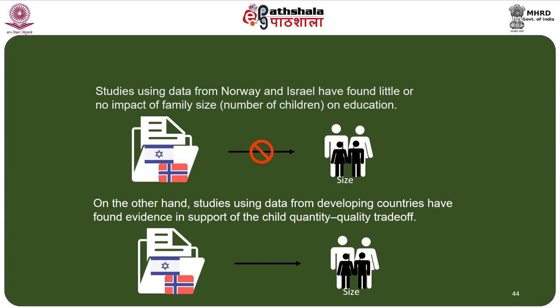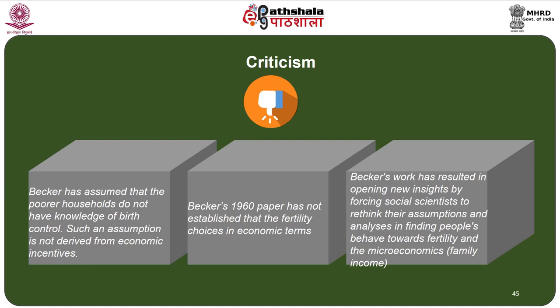There are major criticisms of Becker's theory of fertility. First, Becker assumed that poorer households lack knowledge of birth control — an assumption not derived from economic incentives alone. Second, Becker's 1960 paper did not fully establish fertility choices in economic terms. Third, his work opened new insights by forcing social scientists to rethink their assumptions and analysis regarding fertility behaviour and microeconomics, especially on issues related to family income.